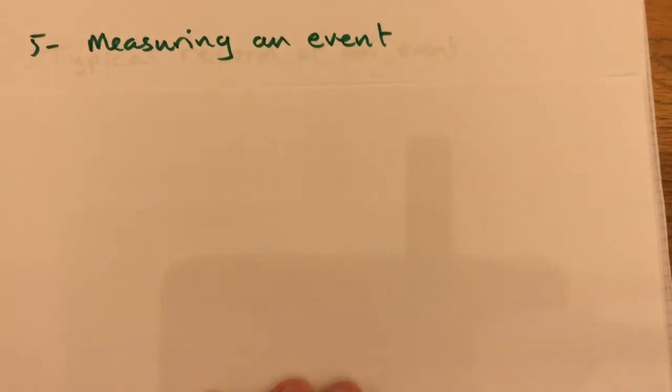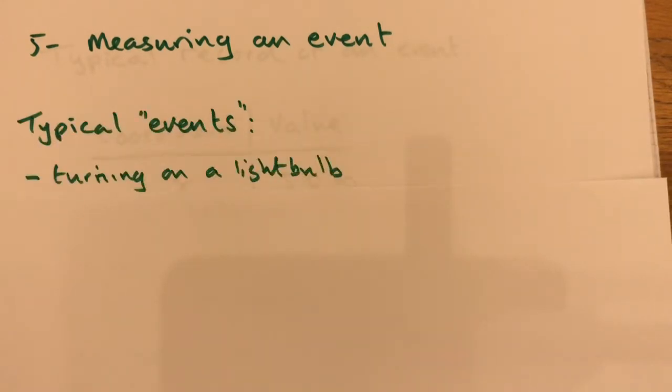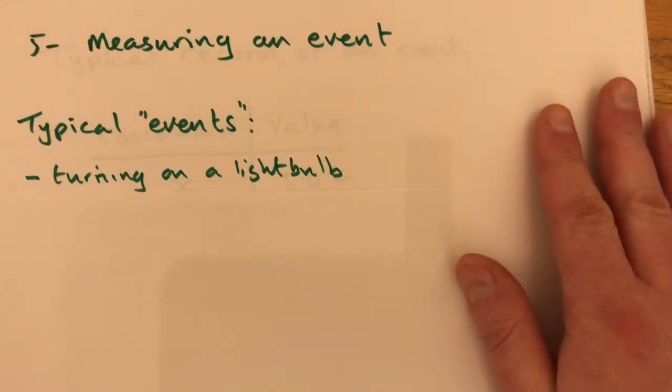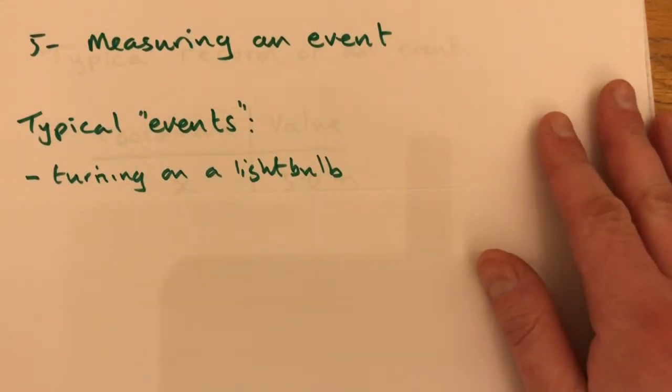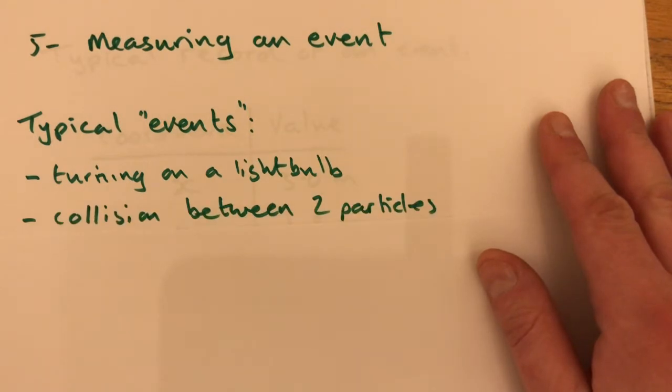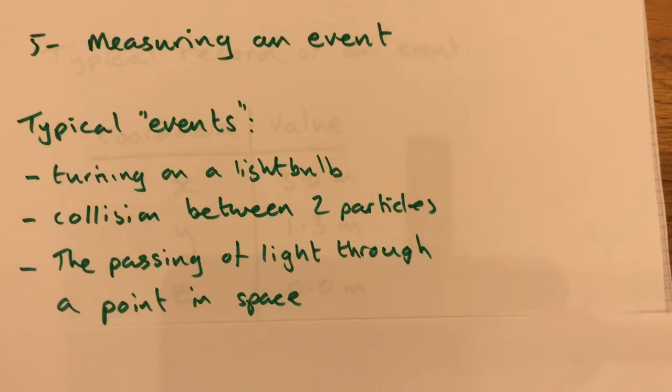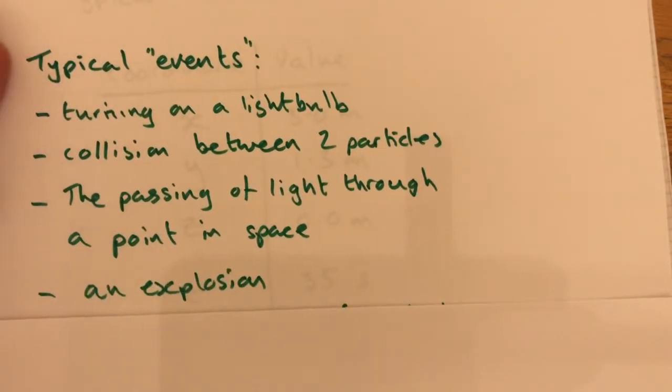Okay, let's talk about measuring an event. Typically, what might these events be? There are five classic examples that we'll come across in the future. One of them is turning on a light bulb, very exciting. The collision between two particles, the passing of light through a point in space, an explosion.